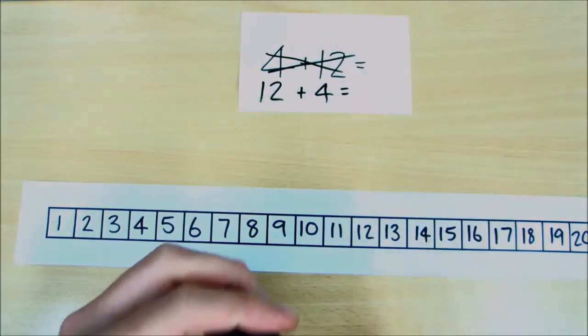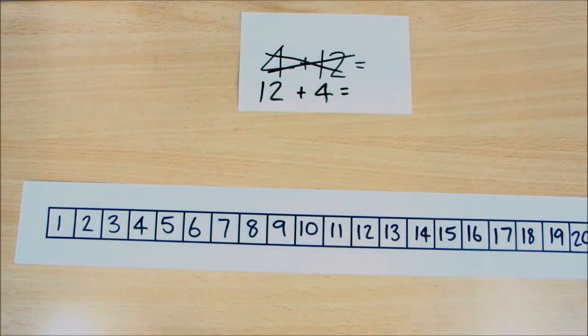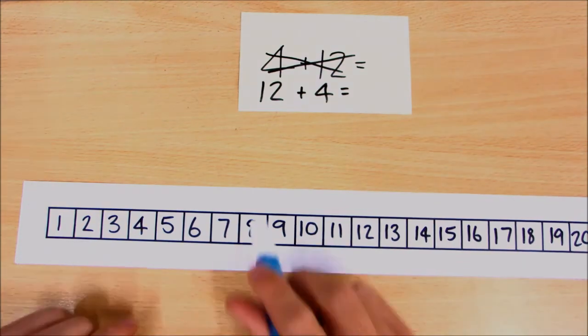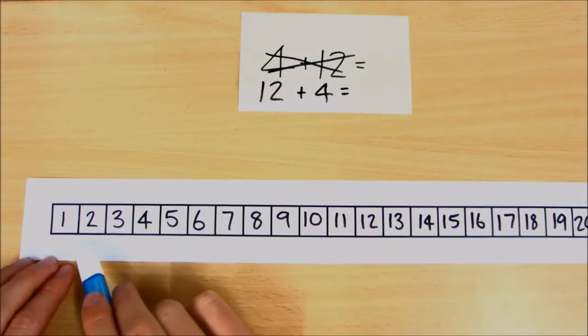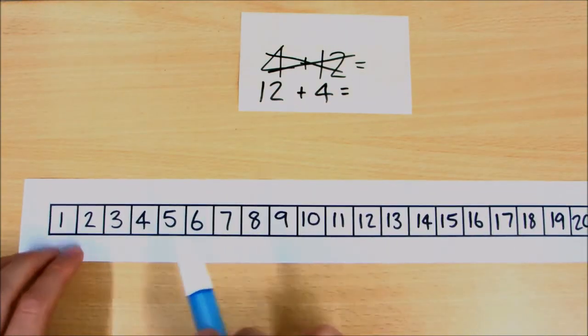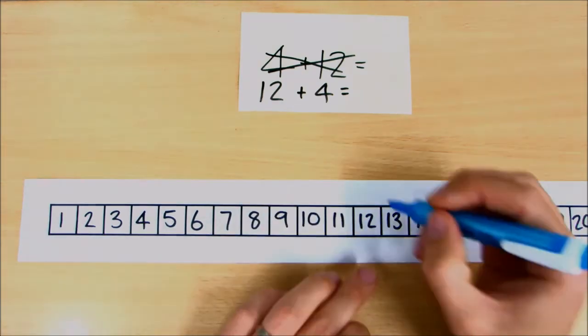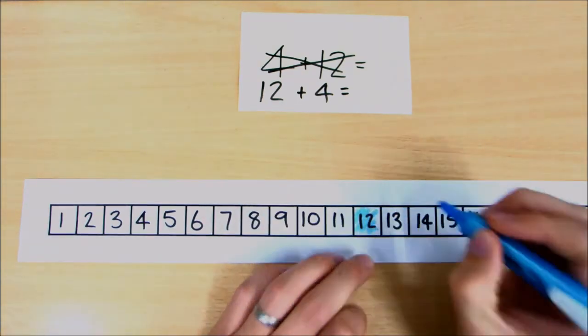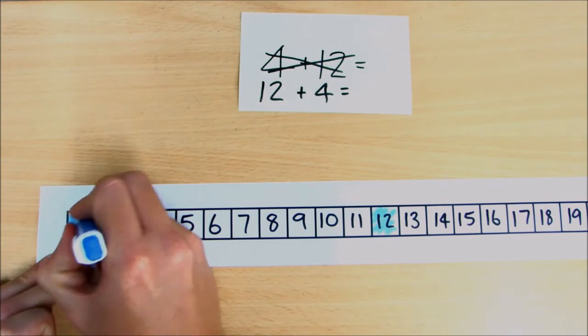Now then, the same as with the first example, what we're going to do is we're going to look for the first number and we're going to color in that many squares. We know the first number is twelve, so we'll get the number twelve and we'll color that in, and then we'll color up to the number twelve.